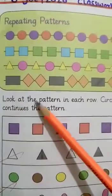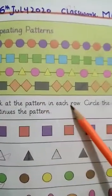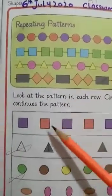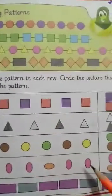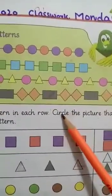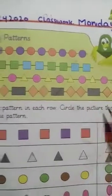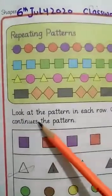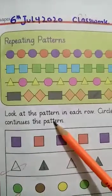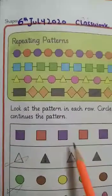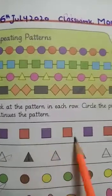Look at the pattern in each row. आपने pattern देखना है, हर row में आपने pattern देखना है, circle करना है. Circle the picture that continues the pattern. हमने circle करना है जो picture हमारी pattern को continue करेंगी.